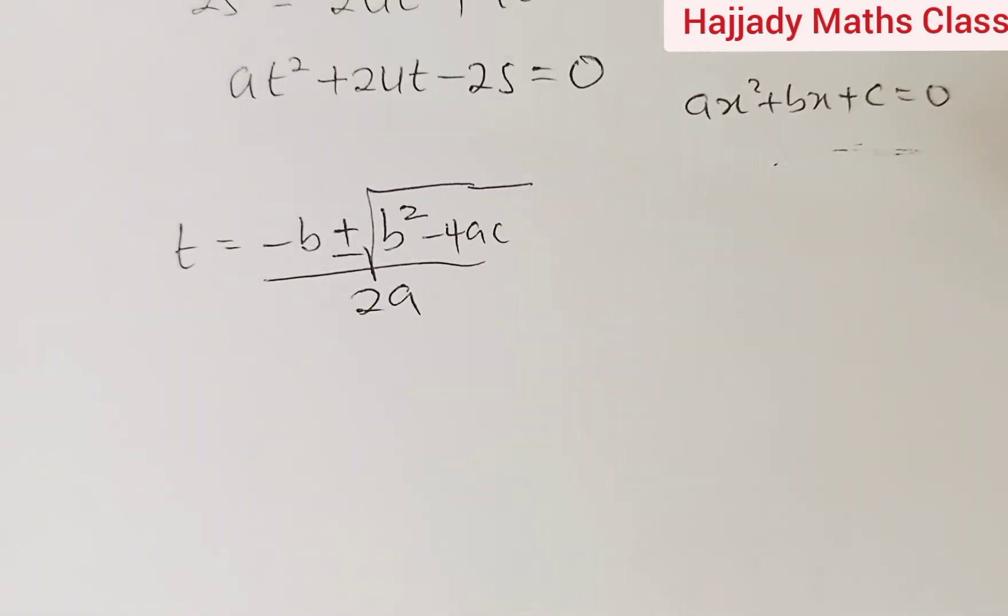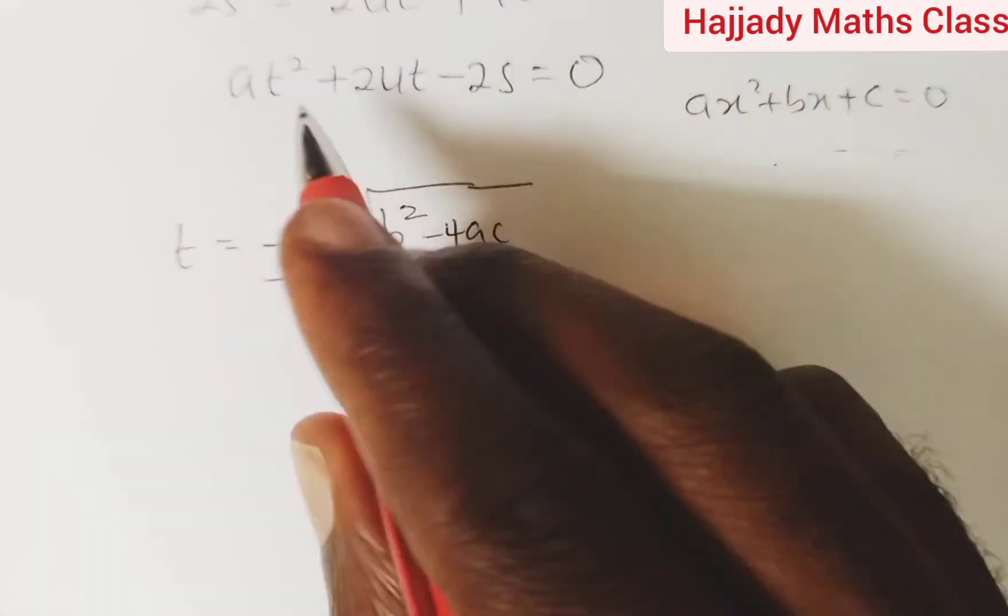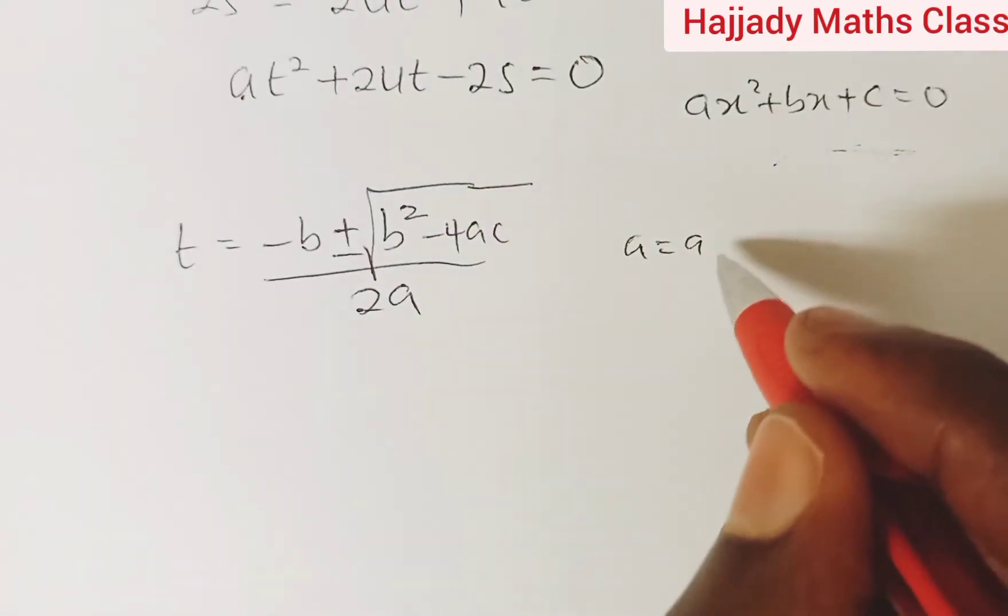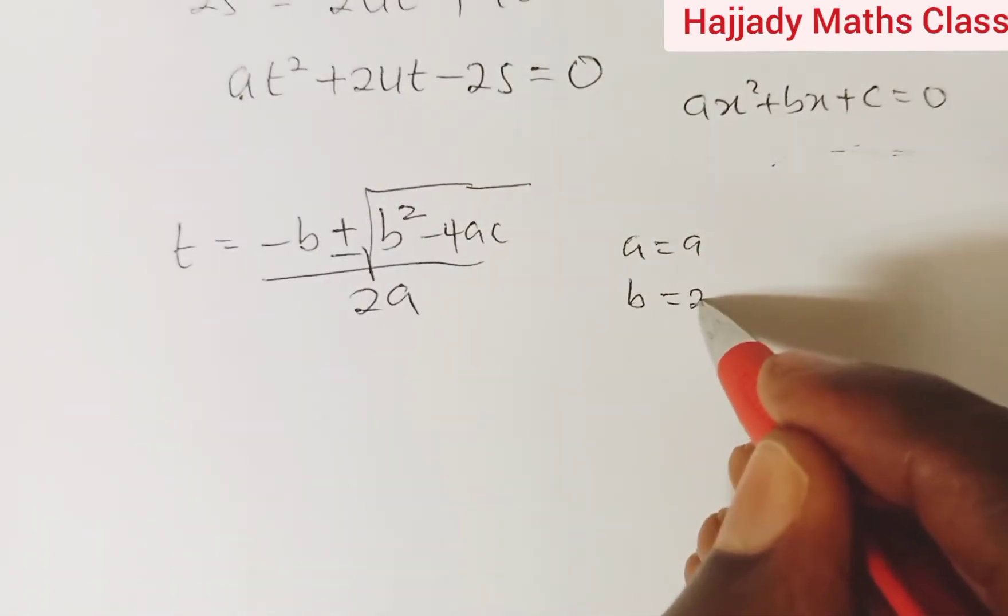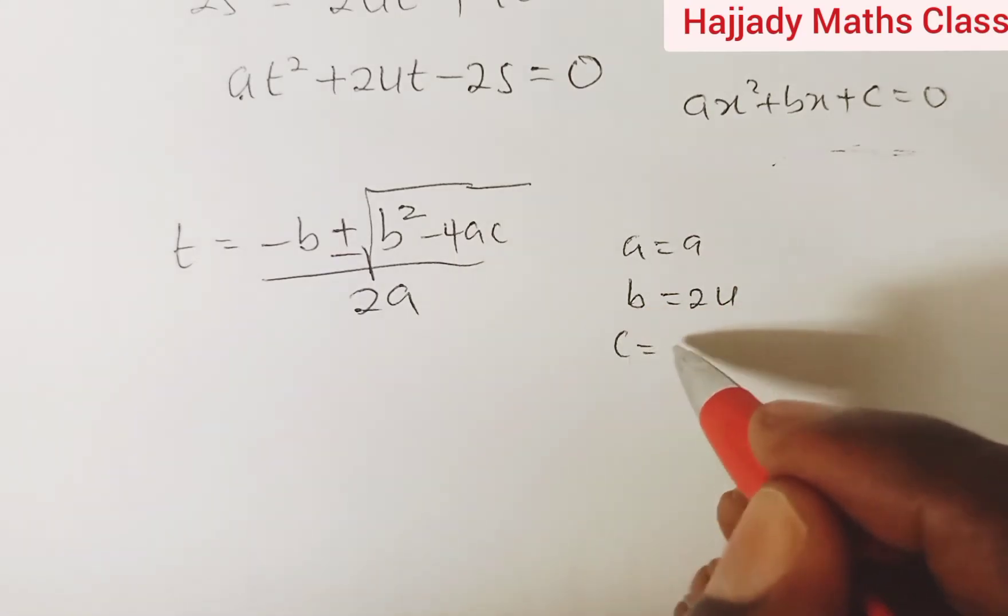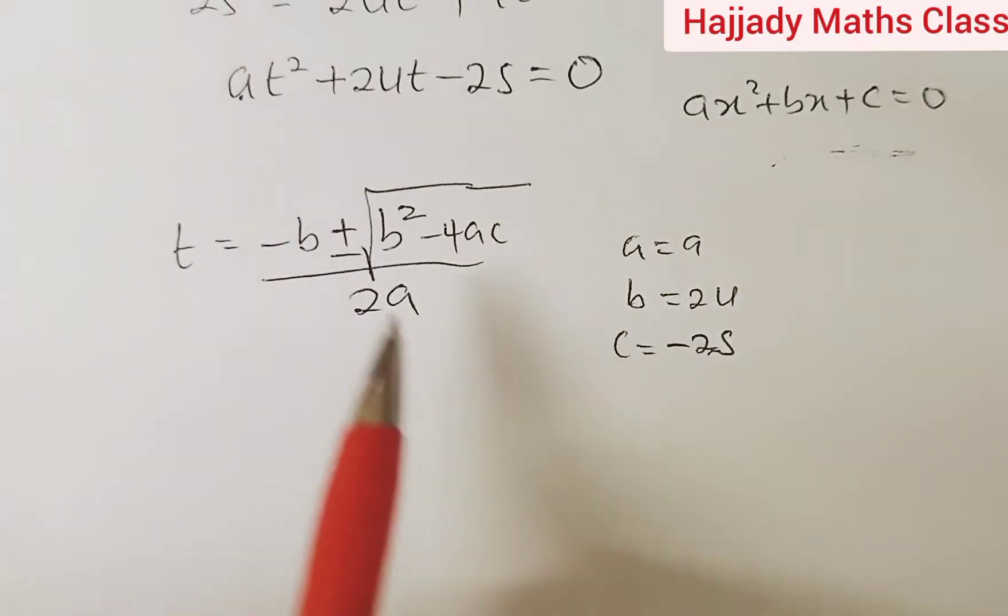So using this approach, it shows that our a remains a, our b equals 2u which is the coefficient of t, and c is minus 2s which is the constant term. So we are substituting this in.